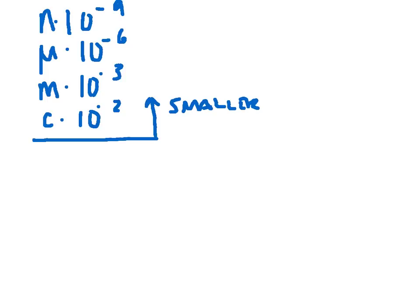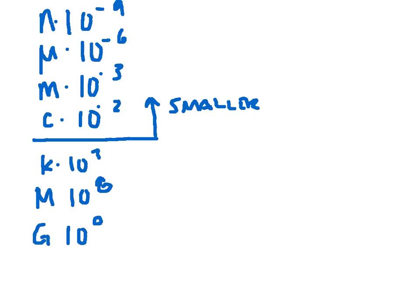Then we're going to have kilo, which is 10 to the 3rd — it's a thousand. Mega, which is 10 to the 6th, which is a million. And giga, which is 10 to the 9th, which is a billion. These things are larger than our base unit. A kilometer is longer than a meter.